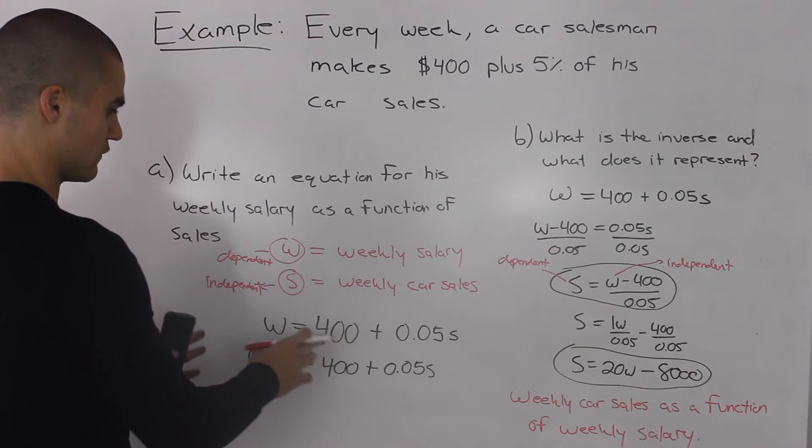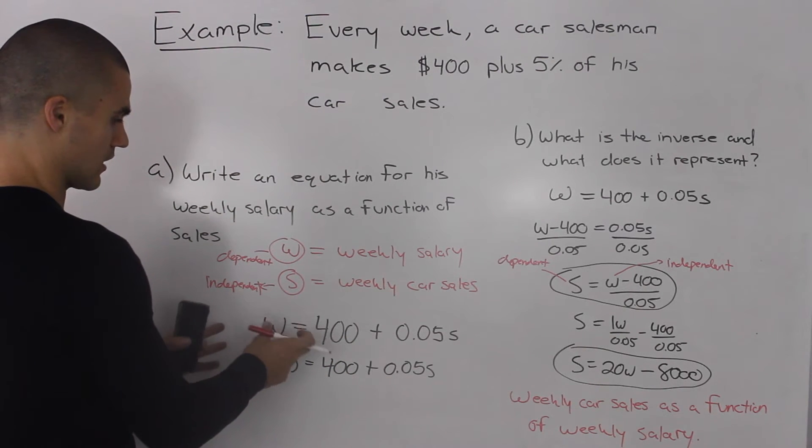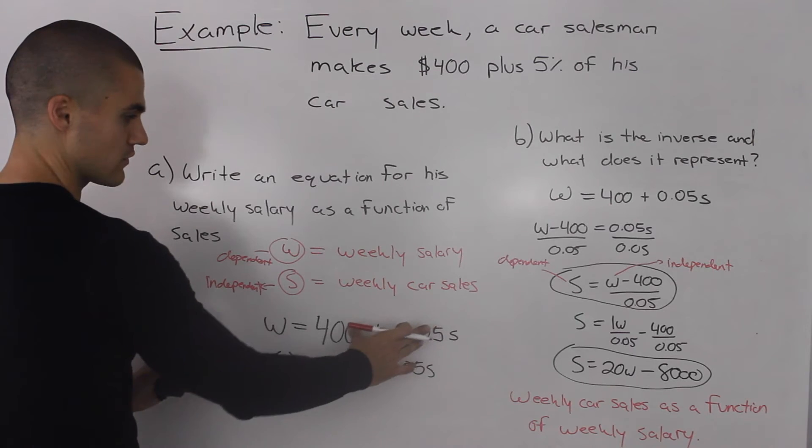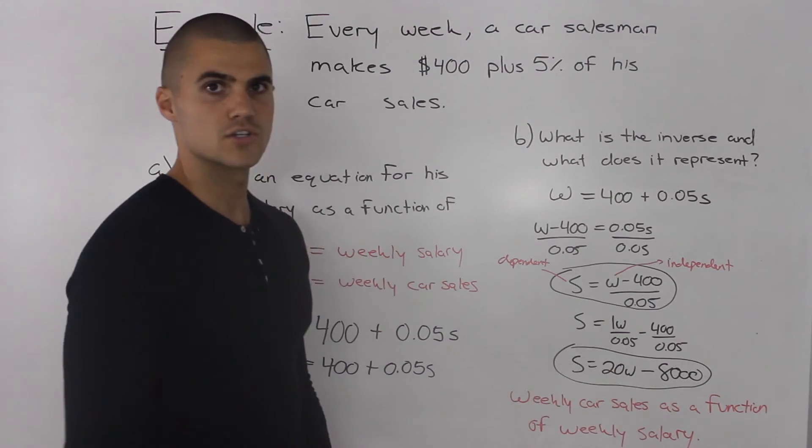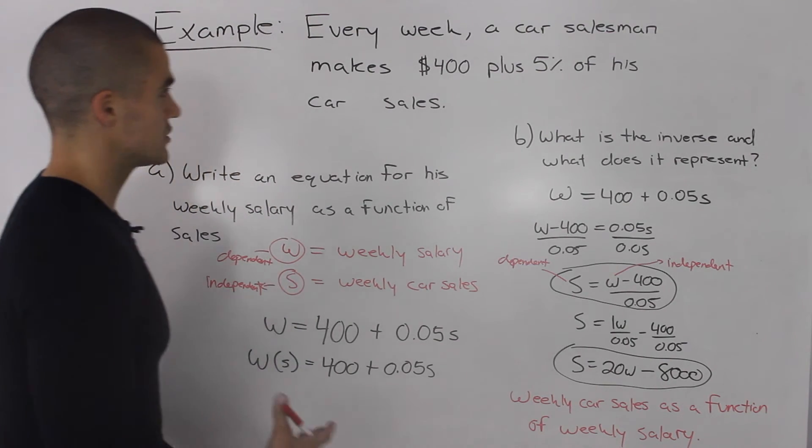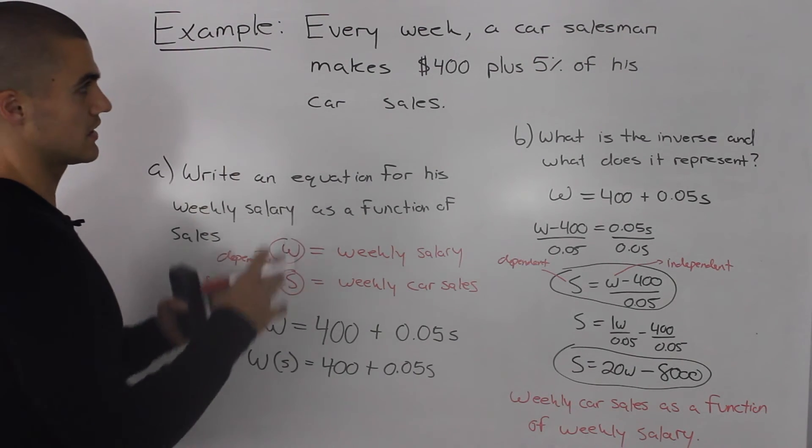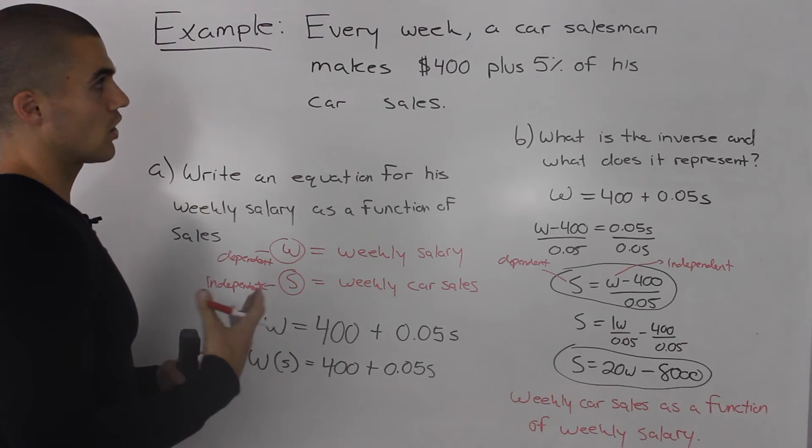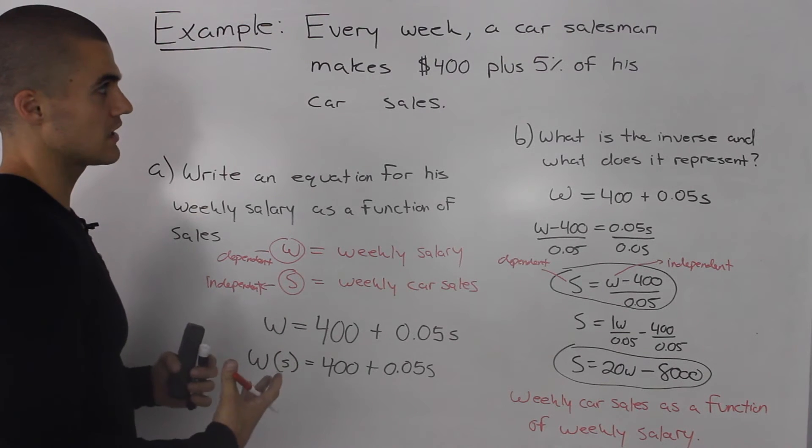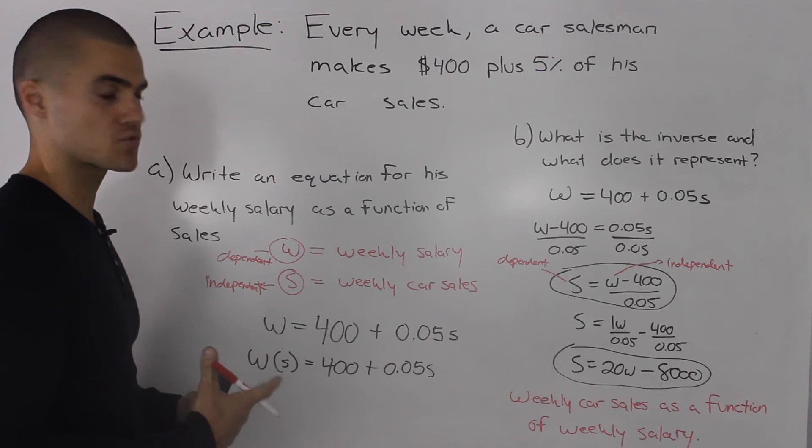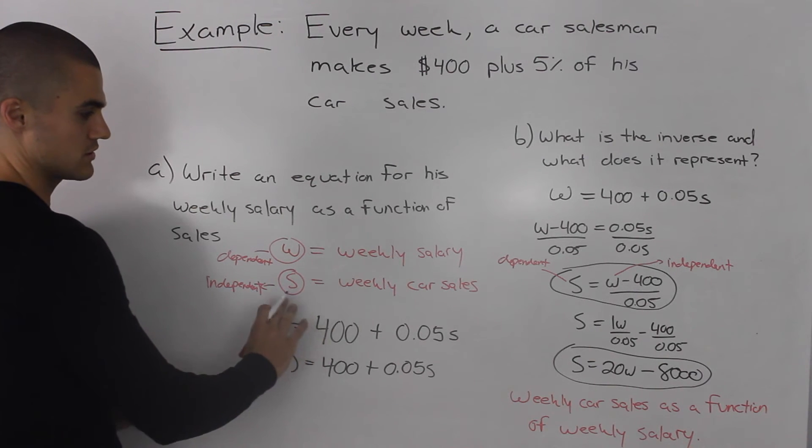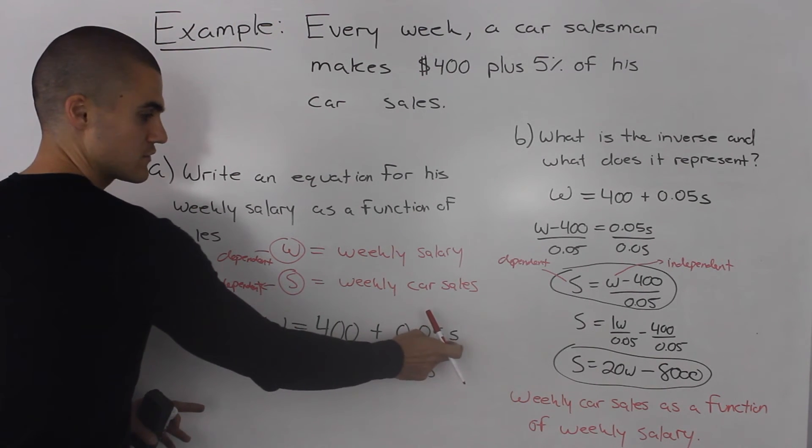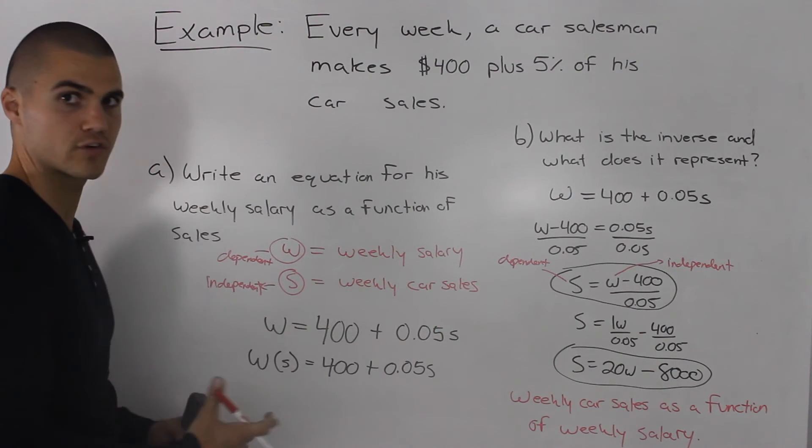Notice here, how we had the weekly salary as a function of the car sales. Here, we have the car sales as a function of the weekly salary. For example, if I ask you a question, according to this scenario, what would the car salesman's salary be if he made $10,000 worth of sales? Well, we're looking for the salary. I'm asking you for the salary. So we would use this function here. We would input the car sales of $10,000 in for S and solve for W.